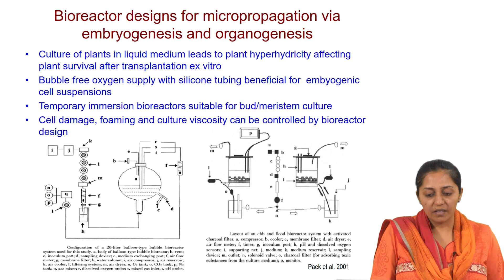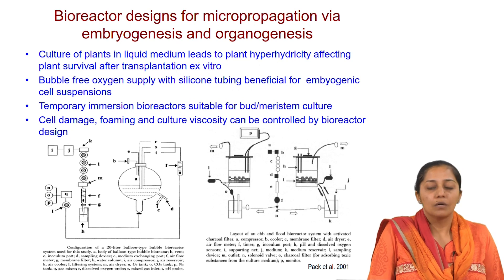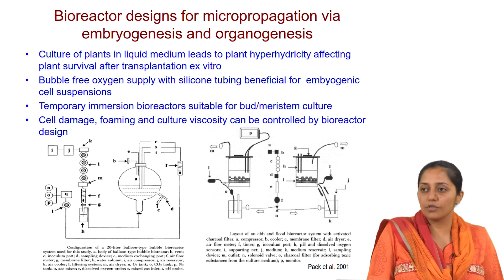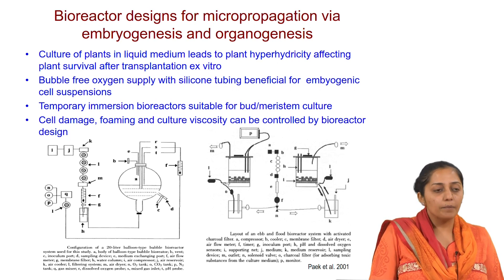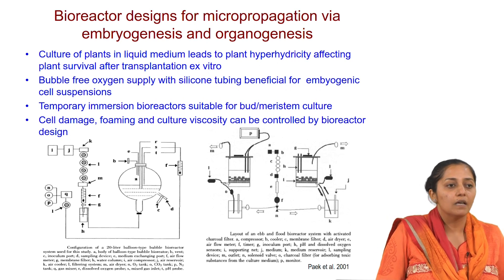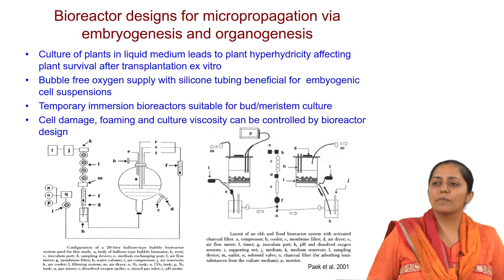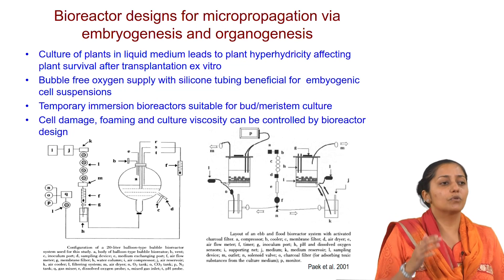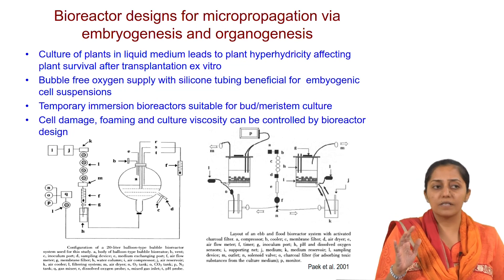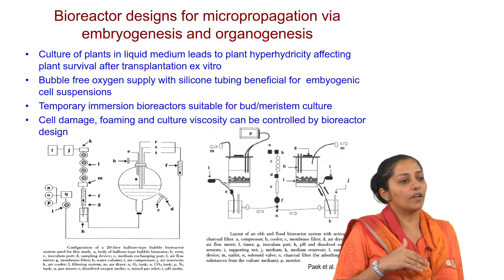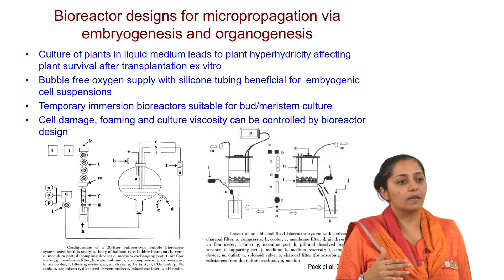Other reactors used in literature for organ cultures, shoot multiplication, or somatic embryos include balloon-type bioreactors for somatic embryo scale-up. These are often used as fill-and-draw systems to manage hyperhydricity or too much water retention. In rotating drum bioreactors, the entire drum rotates, creating cycles of liquid exposure.